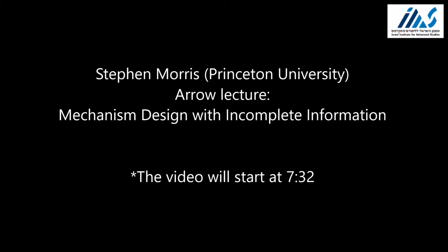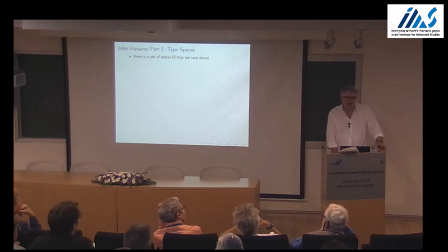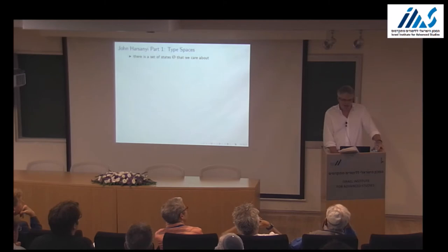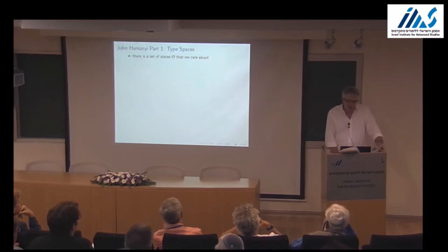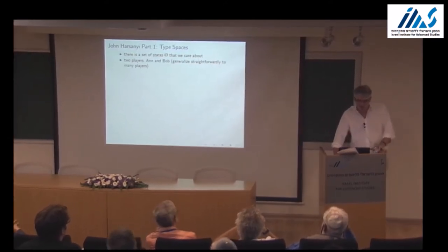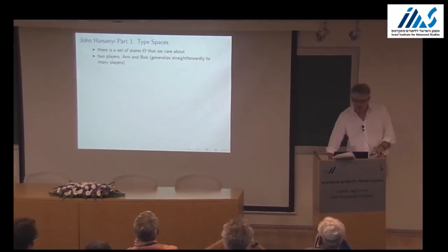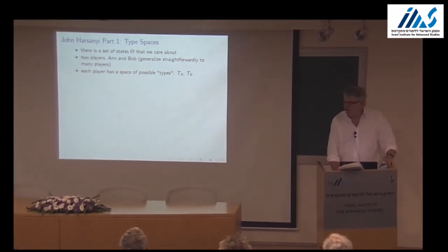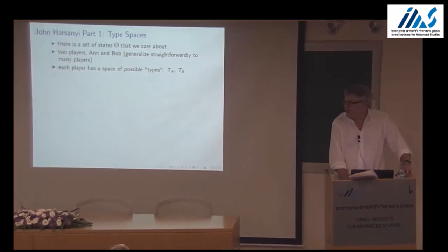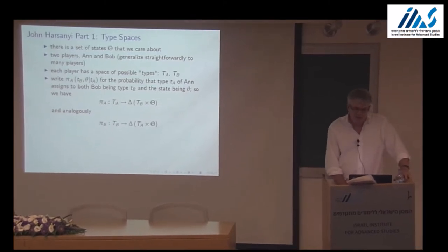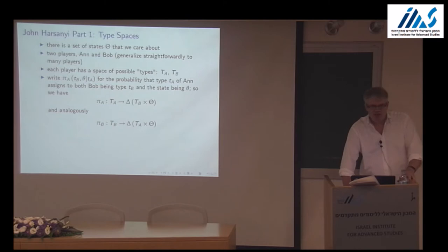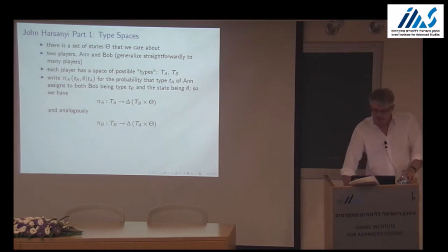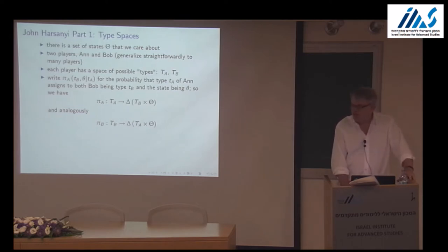One important idea Harsanyi introduced is the concept of types, whose influence cannot be underestimated in modern economics and game theory. The idea is that there's a set of states theta, and suppose there are two players — Ann and Bob — each with a set of possible types, T_A and T_B. To make a type space, each type of Ann assigns a probability distribution over the types of Bob and the states of the world. This ends up as a function taking Ann's types into a probability distribution over Bob's types and states of the world.